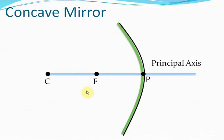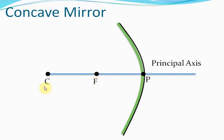The centre of the sphere from which the piece has been cut is called the centre of curvature. The middle point of the piece is called the pole, P. And there's a point called focus between the centre of curvature and the pole. The line that joins the centre of curvature, this focus, and this pole is called the principal axis.